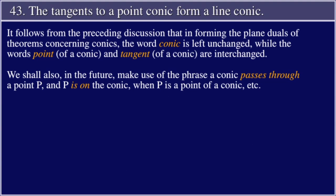It follows from the preceding discussion that in forming the plane duals of theorems concerning conics, the word 'conic' is left unchanged, while the words 'point of a conic' and 'tangent of a conic' are interchanged. We shall also, in the future, make use of the phrase 'a conic passes through a point P' and 'P is on the conic' when P is a point of a conic, etc.